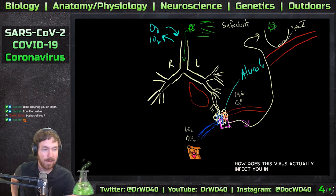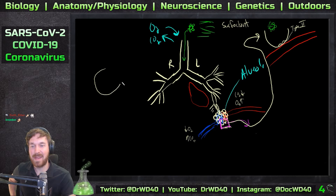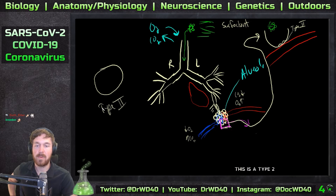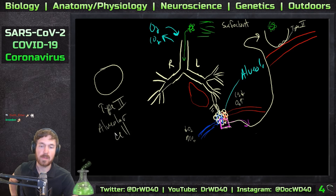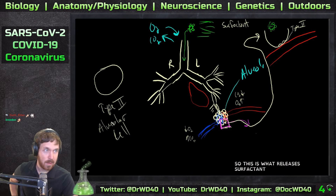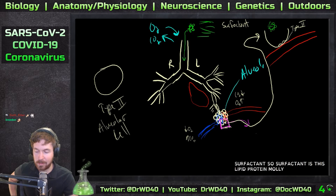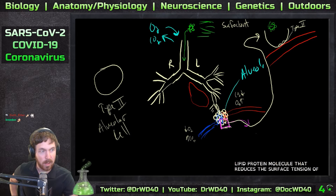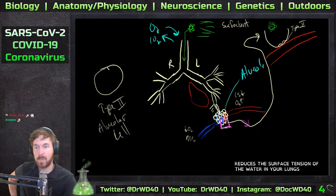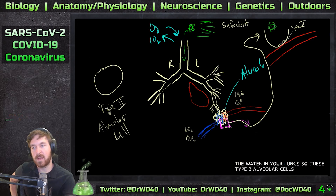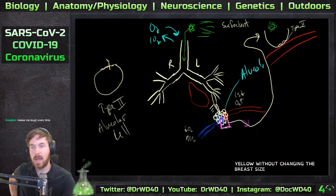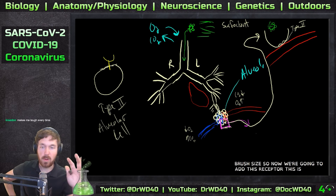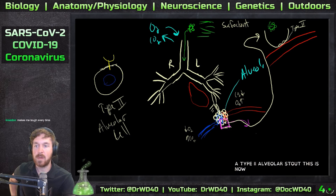Let's expand - this is a Type 2 alveolar cell, which is what releases surfactant. Surfactant is this lipid-protein molecule that reduces the surface tension of the water in your lungs. These Type 2 alveolar cells express something on their surface - now we're going to add this receptor, which is way bigger than it should be. This one is called...